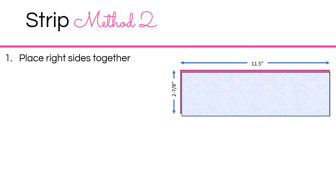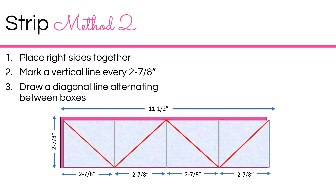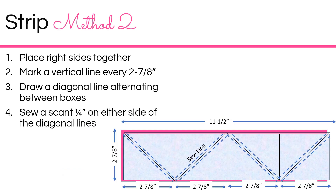For strip method two, you're basically doing it like you do a two at a time, only you're going down the full length of the strip. You will mark out the width of your block — in this case it was a two-inch block, so two and seven-eighths. Then you will draw your diagonal lines, sew on either side of those lines, and then cut vertically where the drawn lines were and also diagonally where the drawn lines are.